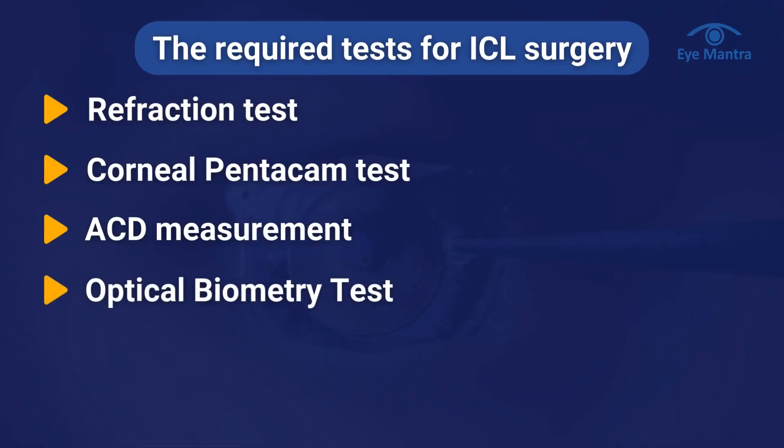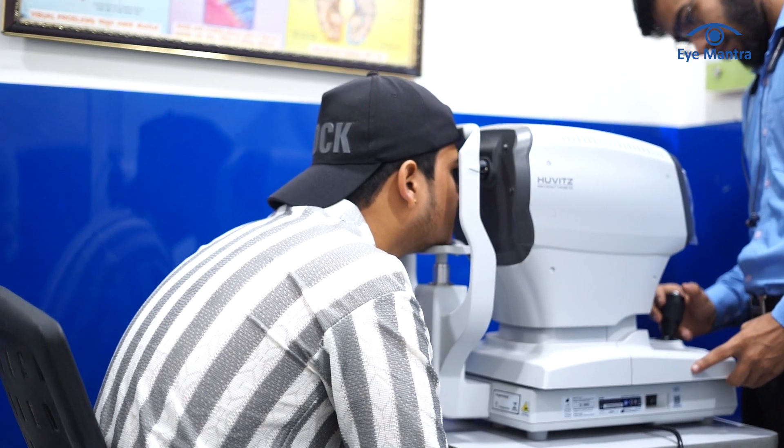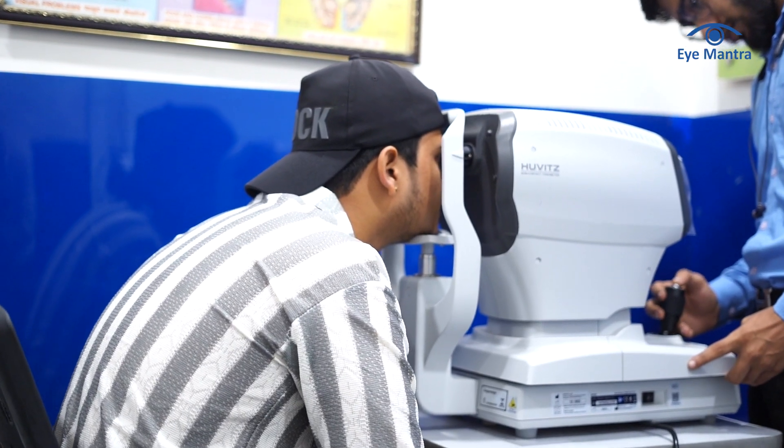Fourth is the optical biometry test, in which the power of the cornea and the length of the eye are measured to determine the correct lens size for you.